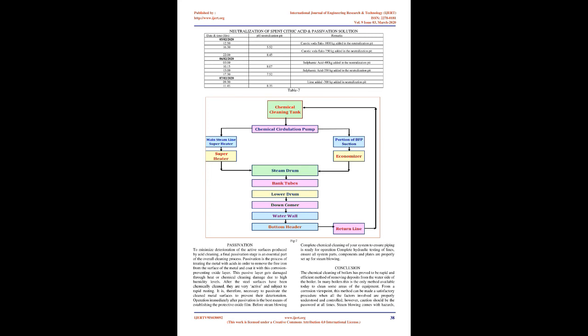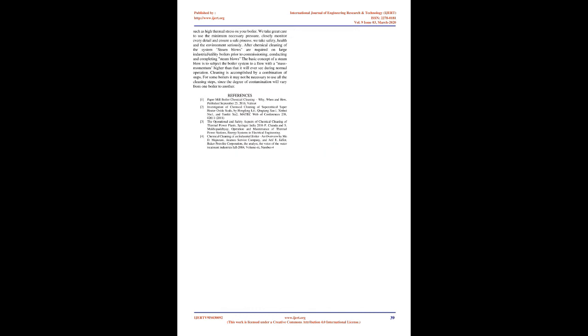Ammonia and RO water rinse: system was filled with RO water and approximately 20 kg of ammonia was added, and flushing started again. This flushing was carried out in open circuit and the spent solution was collected and neutralized with caustic flux. During the process the pH was tested and tabulated in Table No. 6. After that, the system was fully drained. Spent ammoniated RO water solution was neutralized with sulfamic acid.